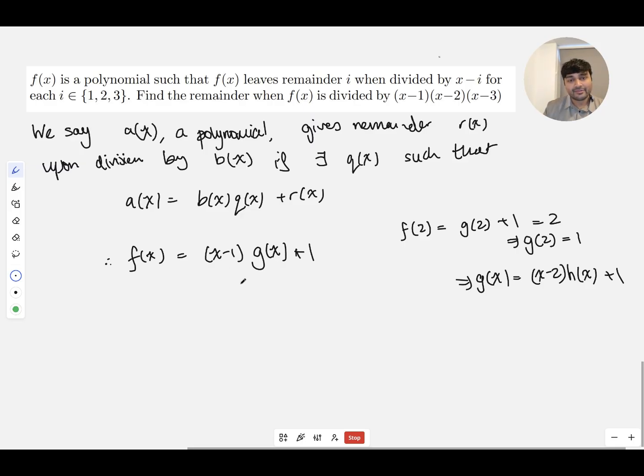Let's plug this into what we have for f of x over here. This is (x minus 1) times this g of x, which we'll write like this: (x minus 2) times h of x, plus 1, and then plus this one that's out here.